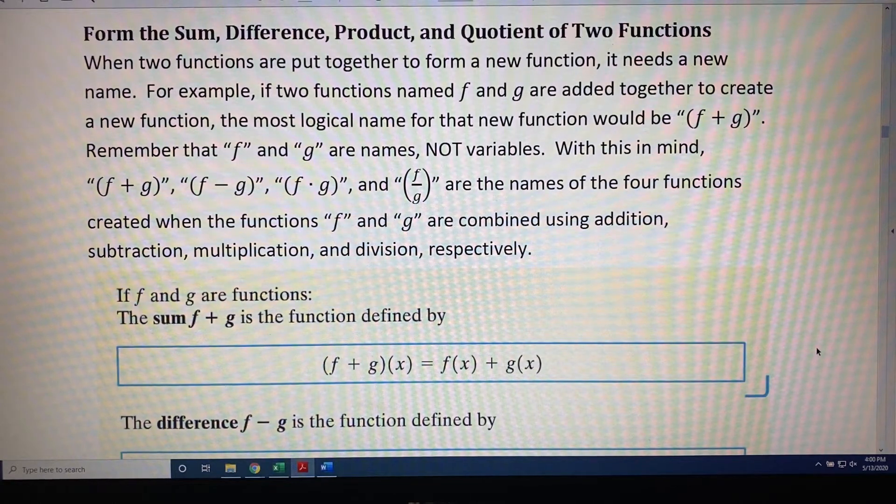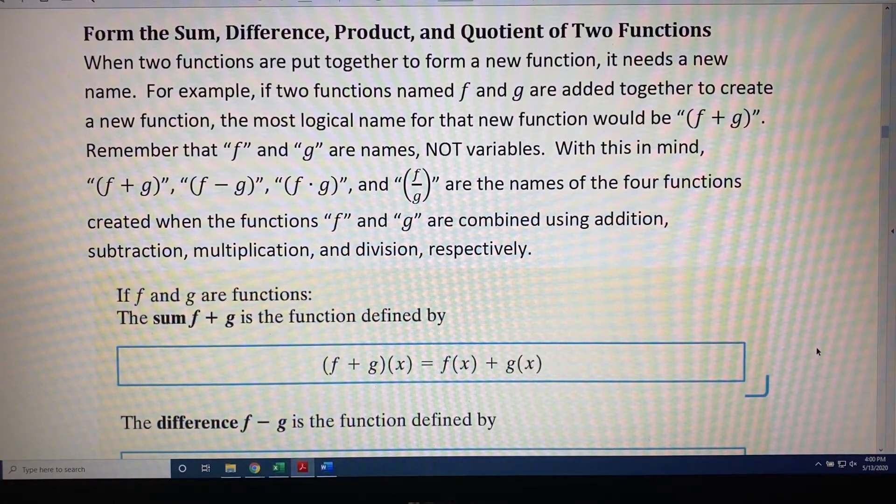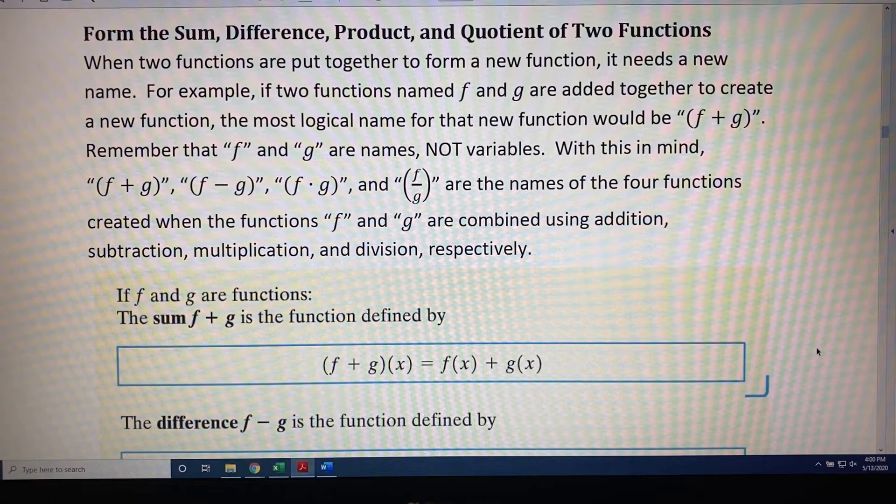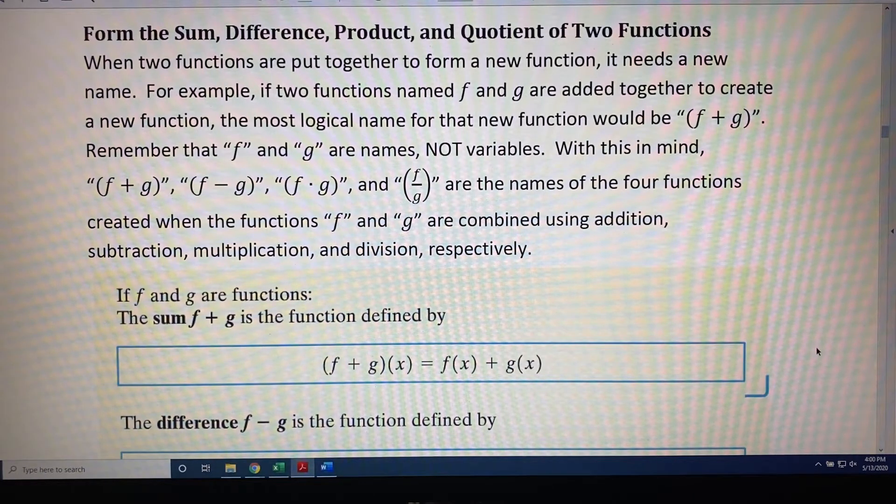With this in mind, f plus g in parentheses, f minus g in parentheses, f dot g in parentheses, and f over g in parentheses are the names of the four functions created when the functions f and g are combined using addition, subtraction, multiplication, and division, respectively.